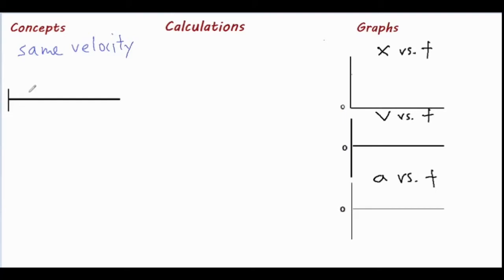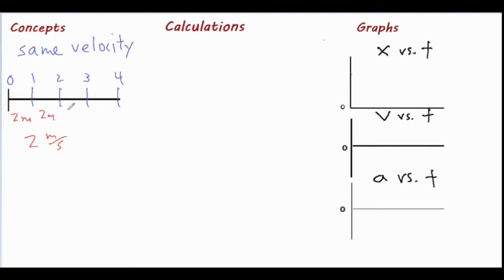What constant velocity really means is that the object is moving the same increment for every second. For example, if it's moving for four seconds and it's moving two meters per second, then it's covering exactly two meters for every second that it moves. So it would move from two to four to six to eight, and so on.